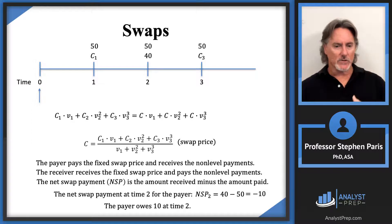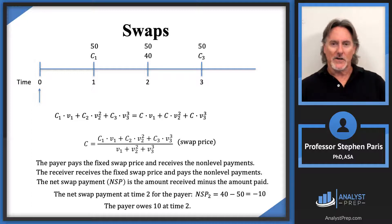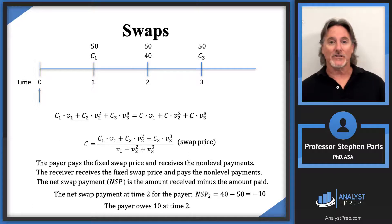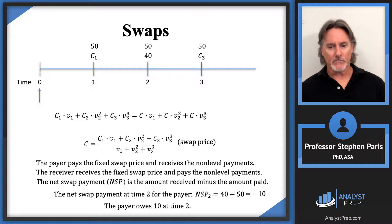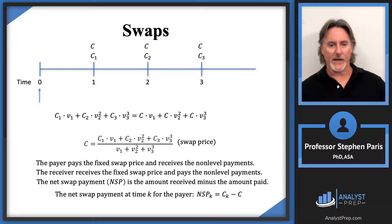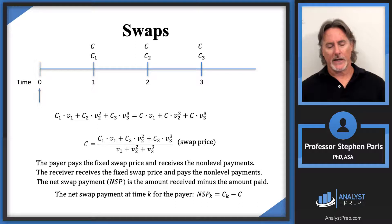You take the amount you're going to receive, subtract off the amount that you're going to pay, and that tells you what the net payment is going to be. In practice, that's what you physically settle with the other person in the swap agreement. Technically, the formula for the net swap payment at time K is: we take the amount received — that's cap C sub K — and subtract off the amount paid — that's cap C. That's the formula for the net swap payment at time K from the payer's perspective.